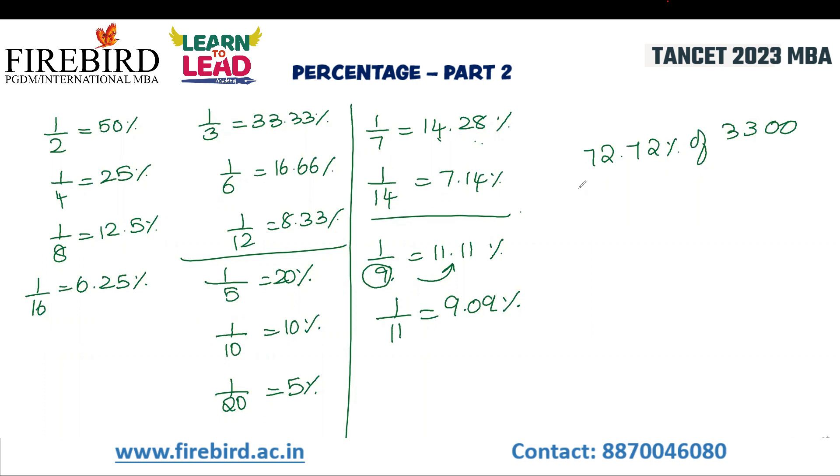72.72 percentage of 3,300. If you ask 10 questions, identify what topic it is - time, speed, and distance topics, for example. In a fraction of a second, identify the topic in your mind. After that, you go to the calculation.